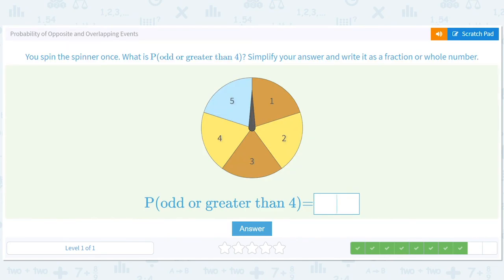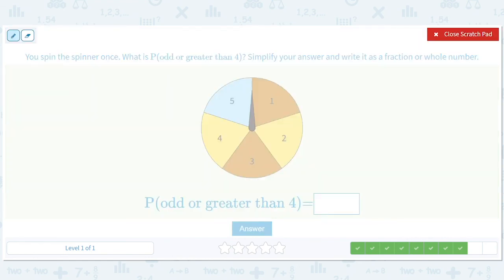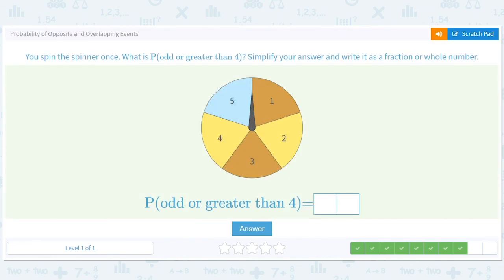You spin the spinner once. What's the probability of getting an odd or greater than four? Okay. So what are the odd numbers? One, three, five, greater than four? We've done this one, right? There's only one thing greater than four. That doesn't give you any more opportunities. So you end up with three out of five. This is still not bad, but now we're going to write it as three forward slash five.